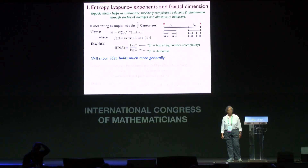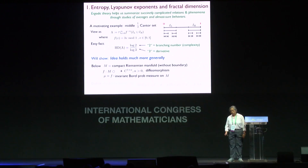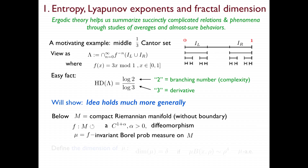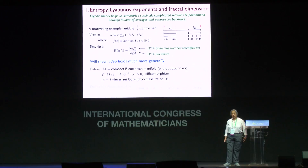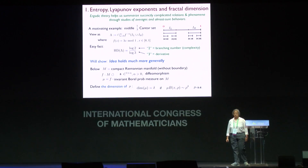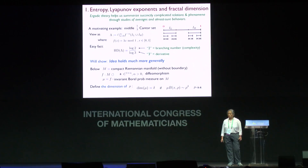The setting I'd like to move to is that of a compact Riemannian manifold without boundary M, and a diffeomorphism that is a little bit more regular than C1. Mu is an F-invariant Borel probability measure on M. I'll assume that this invariant measure is ergodic — it's not necessary, but simplifies things. I'm going to introduce three invariants: dimension, entropy, and Lyapunov exponents. The dimension of the measure mu is delta if at mu-almost every point, a small ball of radius rho has measure proportional to rho to the delta.